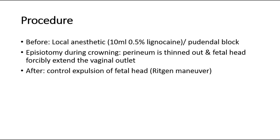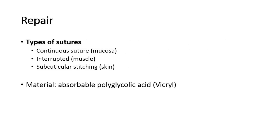After the episiotomy, we have to control the expulsion of the fetal head. After delivery of the baby, we repair the episiotomy incision. The types of sutures used are continuous suture for the mucosa, interrupted suture for muscles, and subcuticular stitching for the skin. The suture material used is absorbable polyglycolic acid, which has tensile strength, non-allergic properties, and a lower risk of infection.